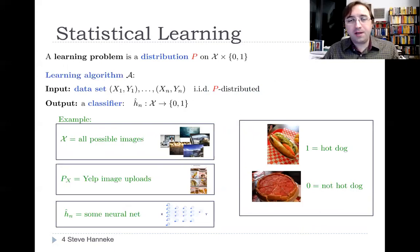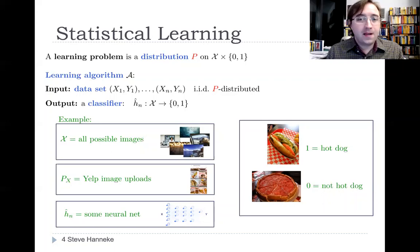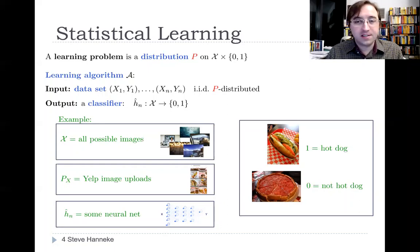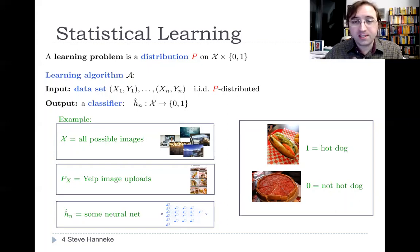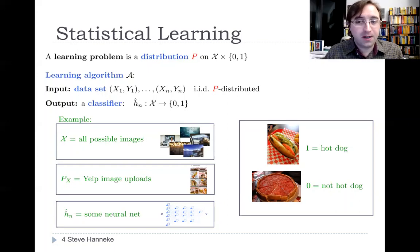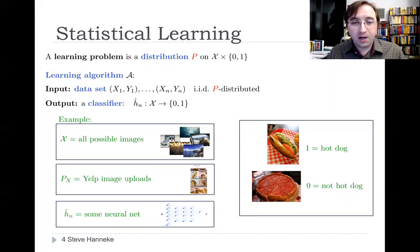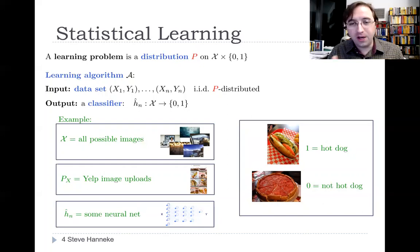Let me begin by defining the statistical learning setting broadly. A learning problem is defined by a distribution on XY pairs, where X is in some space and Y is a binary label. For instance, the space X might be all possible images, and the marginal distribution on X might represent all the images uploaded to Yelp past, present, and future. And maybe the label has an interpretation of one for hot dog and zero for not hot dog.